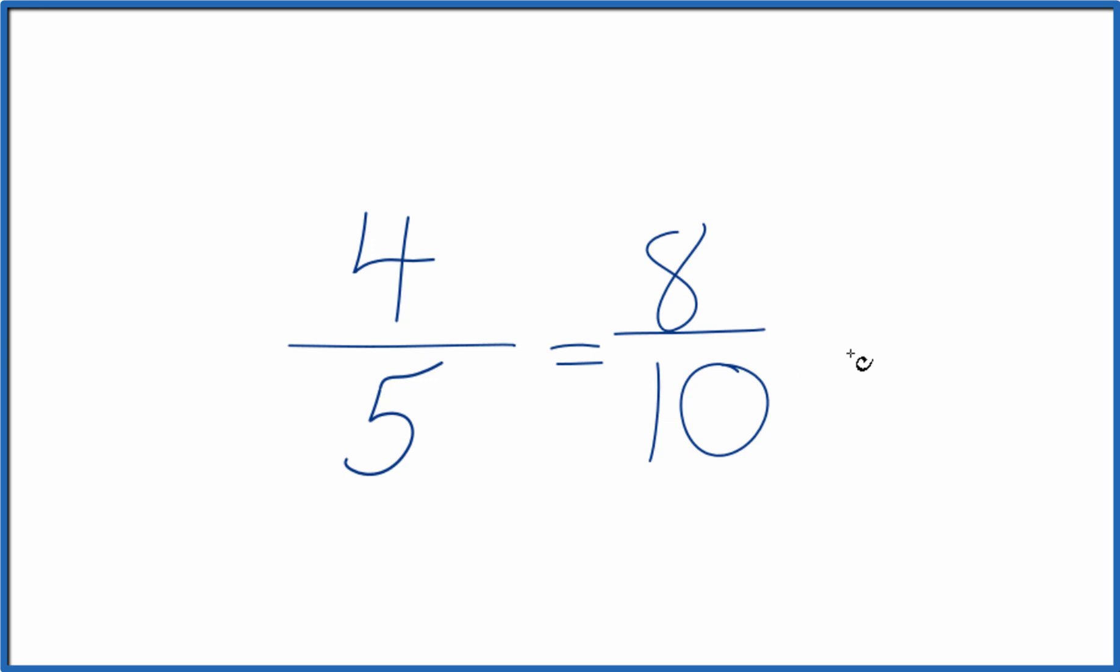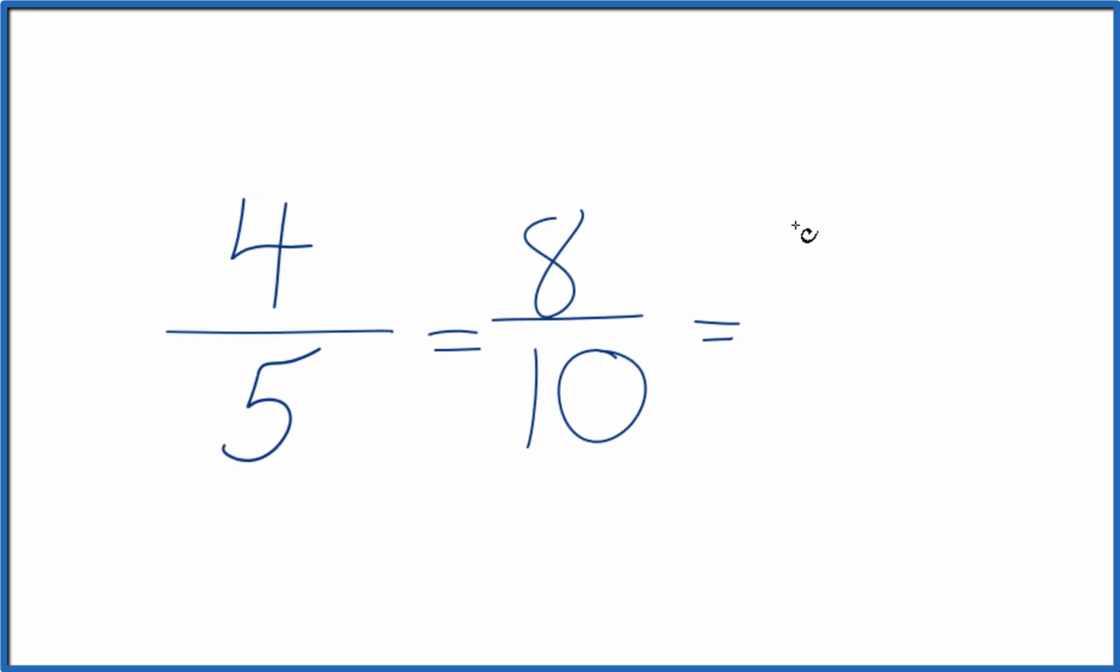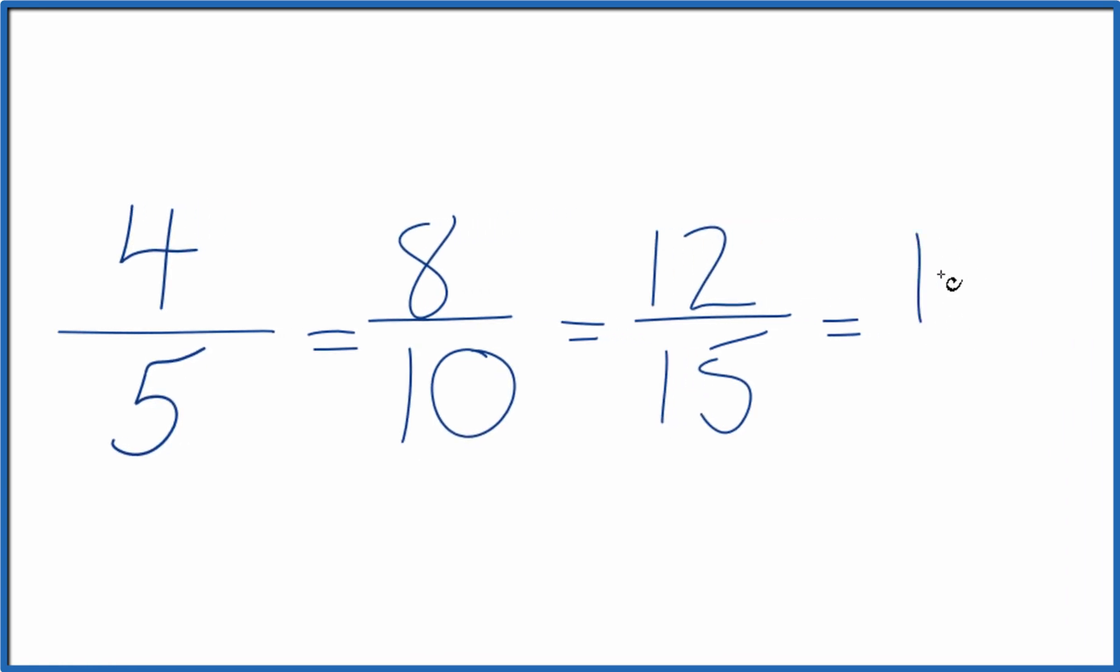Let's do another one. Let's multiply them both by 3. 4 times 3 is 12. 5 times 3 is 15. One more. 4 times 4, that's 16. 4 times 5 is 20.